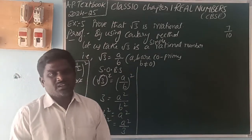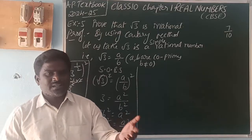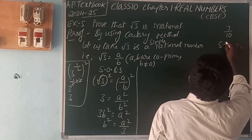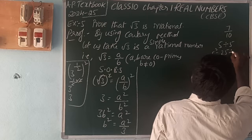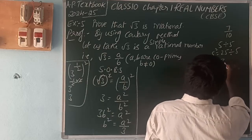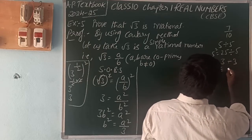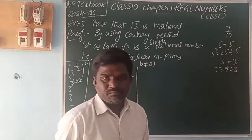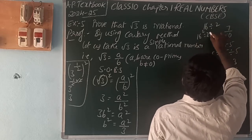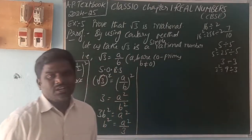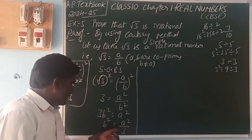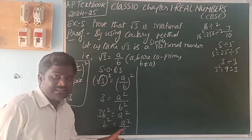We know the theorem: if p is a prime number and p divides a squared, then p also divides a. For example, 5 divides 5 squared (which is 25), and 25 is also divisible by 5. Another example: 3 divides 9 (3 squared), and 9 is divisible by 3. Also, 2 divides 16 (4 squared... wait, 16 squared is 256), and 256 is divisible by 2. So here, since a squared is divisible by 3, then a is also divisible by 3.